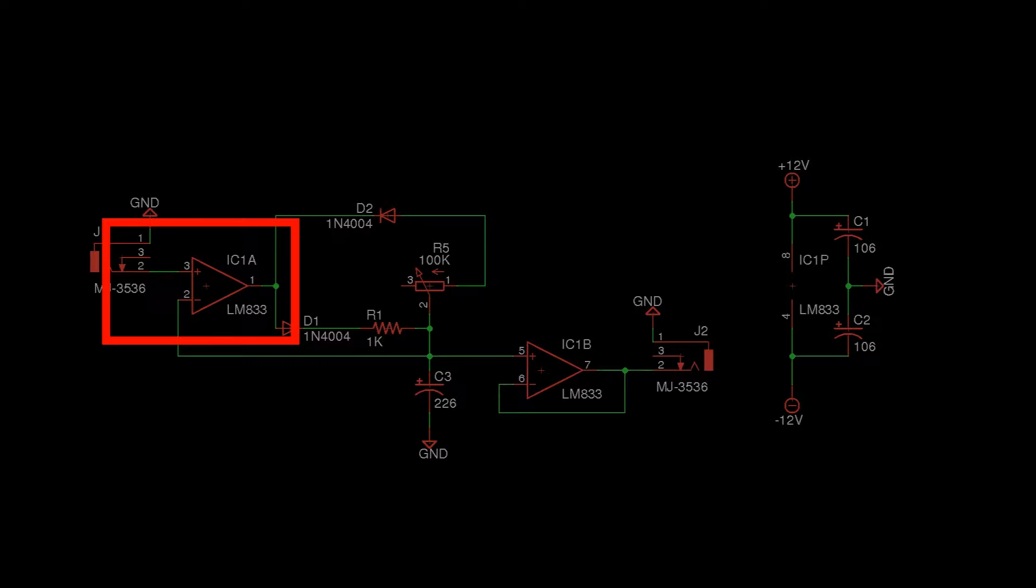When this module is in use, this op-amp uses the trigger pulse to charge the 22 microfarad capacitor through the 1kohm resistor and a diode. The resistor provides the attack profile of the envelope and the diode separates the attack and release portions of the circuit.